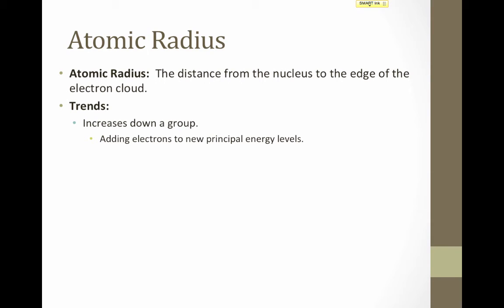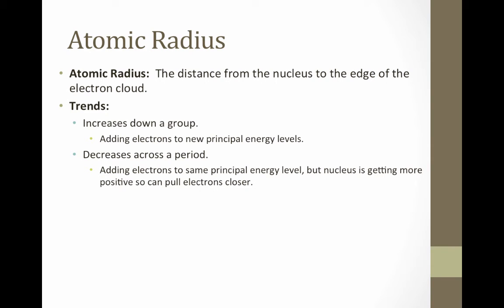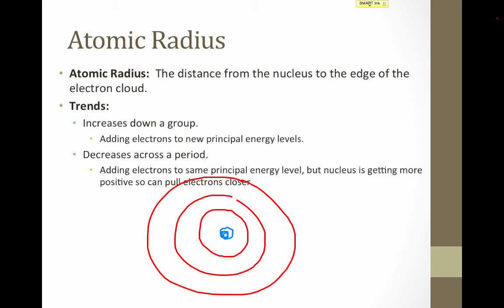What's a little more surprising is the trend across a period. It turns out that atomic radius decreases across a period. Recall that as we go across a period — let's say period three with three principal energy levels — we don't actually add any energy levels. We simply add electrons to the same energy level. So the electrons aren't getting any further away from the nucleus, but the nucleus is getting more and more positive as the number of protons increases. Therefore, we have additional pull from the nucleus, which actually serves to bring the entire electron cloud closer to the nucleus, decreasing the atomic radius.